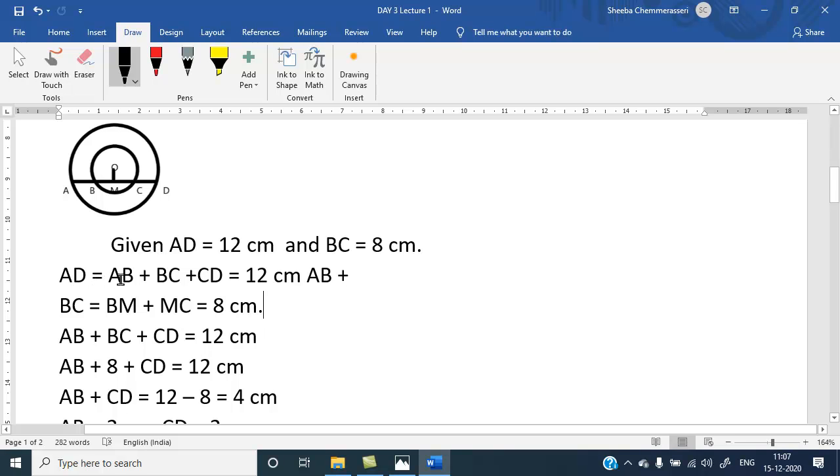AD equal AB plus BC plus CD. That is 12 cm. Also, BC is BM plus MC. That is 8 cm given. So, AB plus BC plus CD is 12 cm. So, AB plus 8 plus CD is 12 cm.